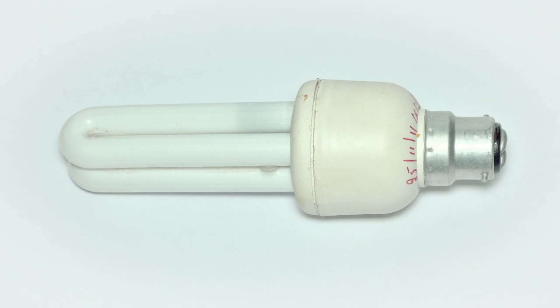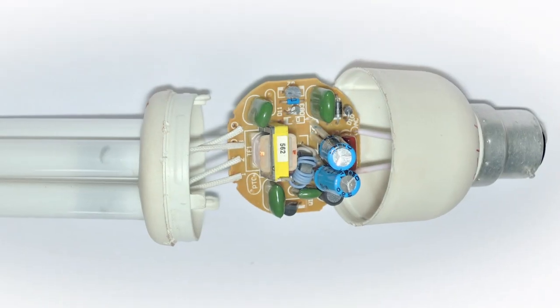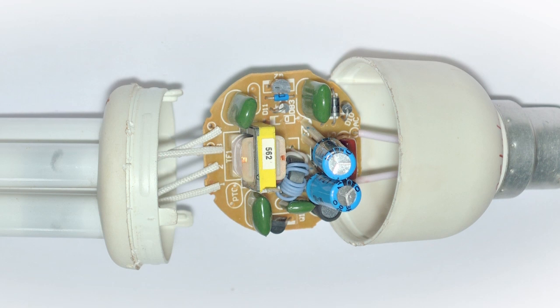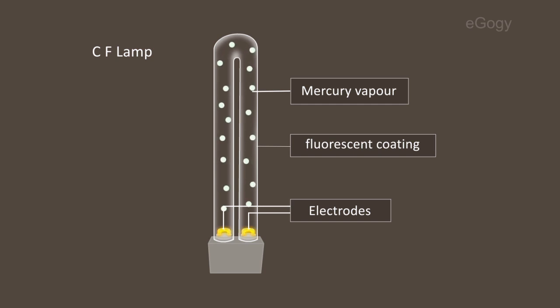CFL. Nowadays, CFL lamps are used for reducing the usage of electricity. Compared with fluorescent lamps, the length of CFL lamps is less. CFL mainly consists of a unit of electronic circuit and a fluorescent tube containing mercury vapor. With the help of the electronic circuit, high-frequency electricity is supplied between the electrodes of the tube. As a result, electrons are emitted from the electrodes, and collision between electrons and the mercury vapor produces ultraviolet rays inside the tube. The fluorescent coating inside the tube absorbs these ultraviolet rays and converts them into visible light.